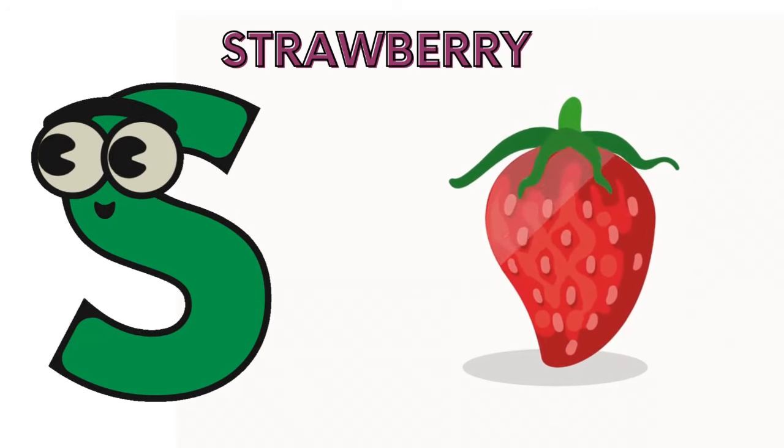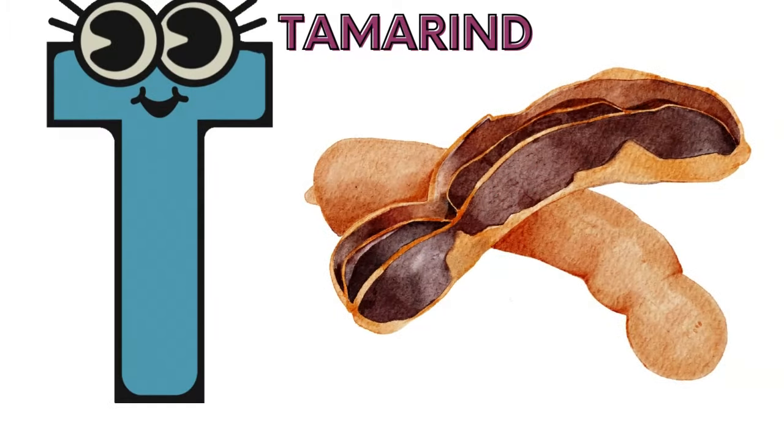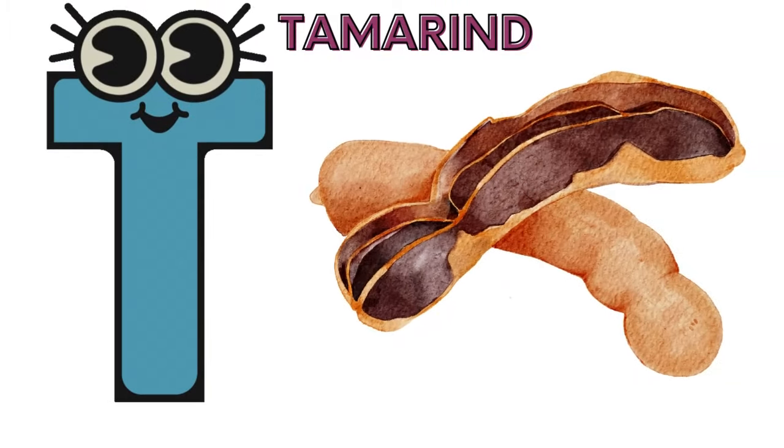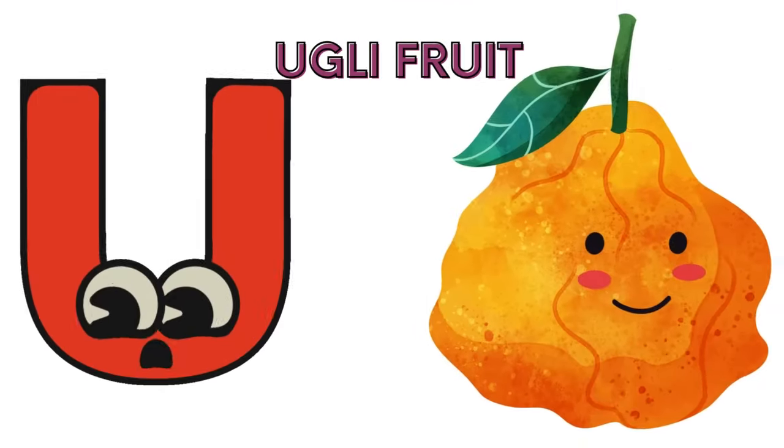S is for strawberry, s-s, strawberry. T is for tamarind, t-t, tamarind.